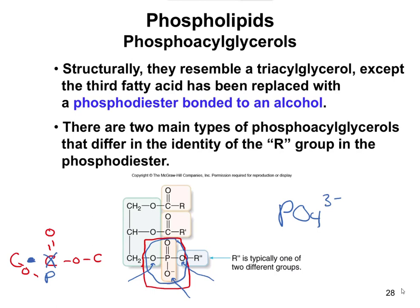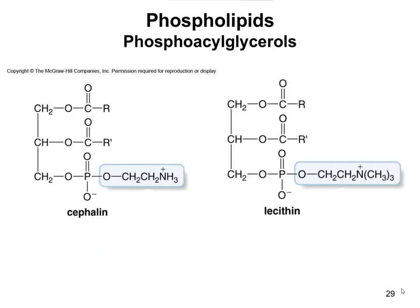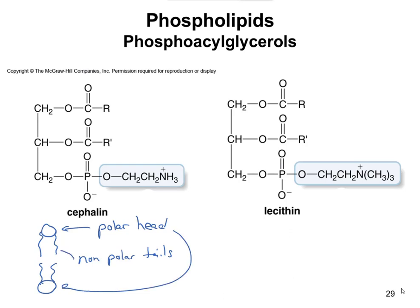There are two main types of phosphoacylglycerols that differ in this R group down here in particular. You don't need to memorize these; I just want to point them out and look at a couple of the properties. Cephalin and lecithin are two of the primary phospholipids that form our cell membranes, and the only difference between them is really in what we call the polar head group. In biology class you may have seen a cell membrane drawn as a bilayer, where people describe the polar head group on the outside and nonpolar tails in the middle.